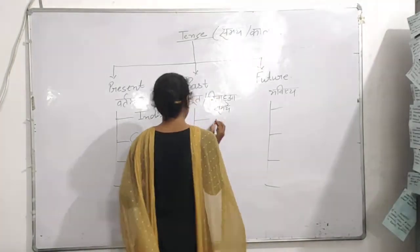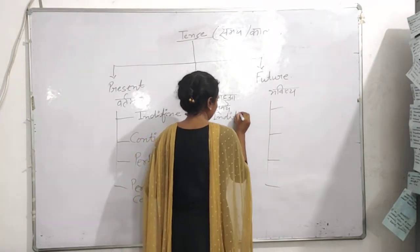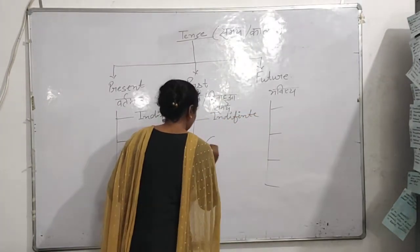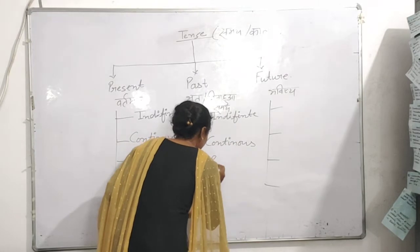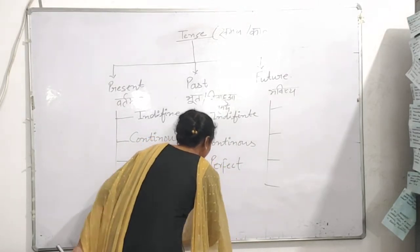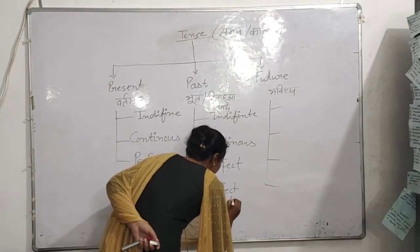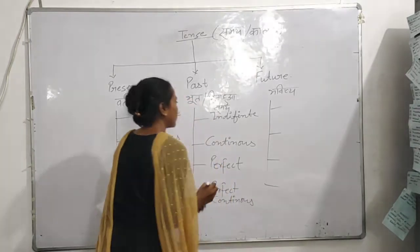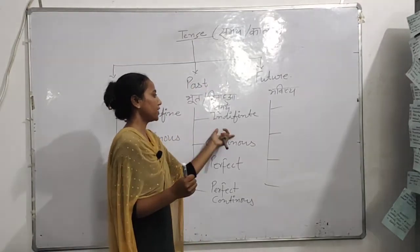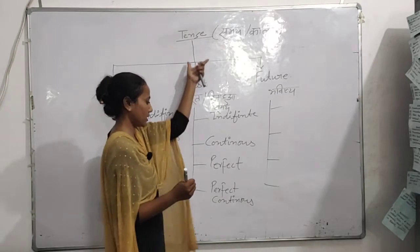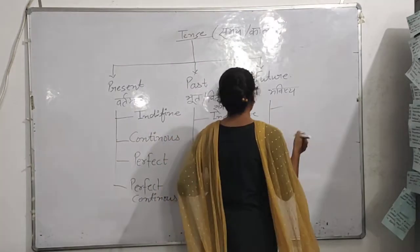और यहाँ पर भी हम लिख देते हैं — Past में भी same रहेगा। Past के भी चार प्रकार हैं: Past Indefinite Tense, Past Continuous Tense, Past Perfect Tense, और Past Perfect Continuous Tense। इसी तरह हमारा Future में भी चलेगा।